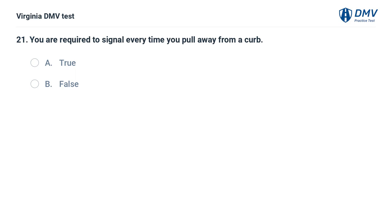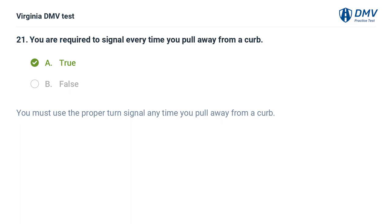You are required to signal every time you pull away from a curb. A. True, B. False. The correct answer is A: True. You must use the proper turn signal any time you pull away from a curb.